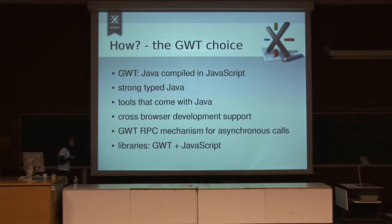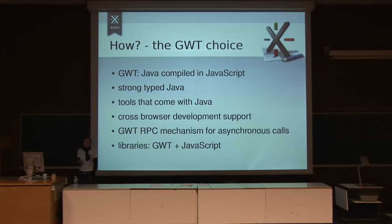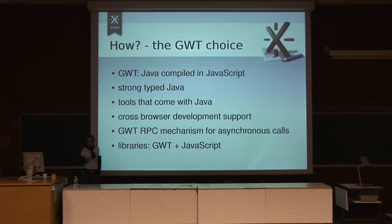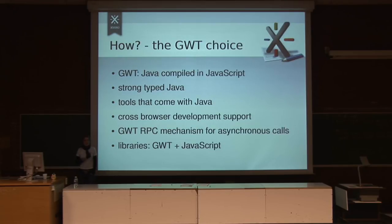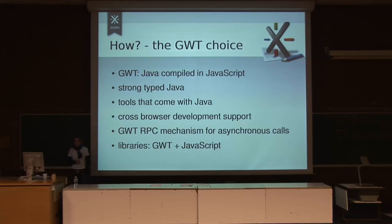How did we build our editor? We did it in GWT. Why GWT? For those who don't know what GWT is, it's the Google Web Toolkit. It's a framework for developing JavaScript applications in Java from Google, which basically compiles Java into JavaScript code. So all the coding you do, you do in Java, and everything is compiled into cross-browser compatible JavaScript code.